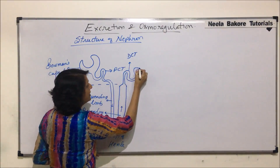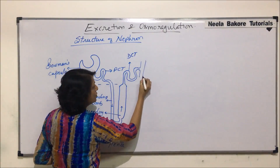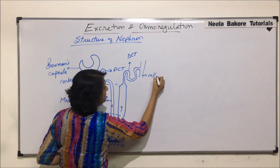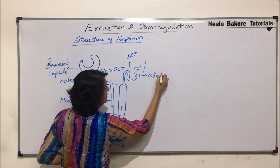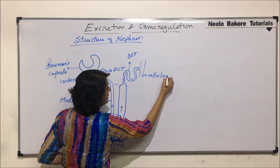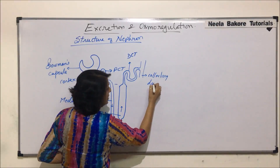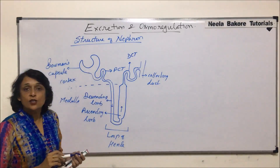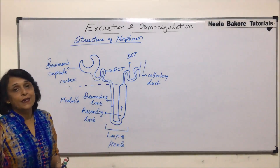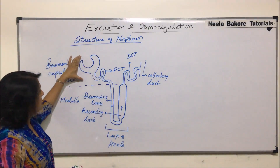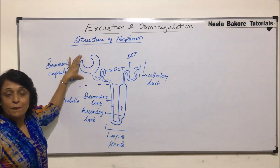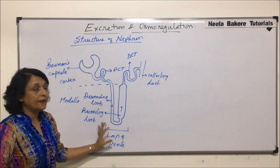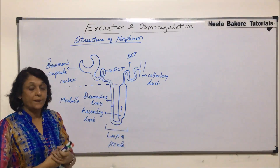This tubule then opens into a collecting duct. So this is the basic structure of the nephron — a cup-like part which is the Bowman's capsule, and then a tube structure.